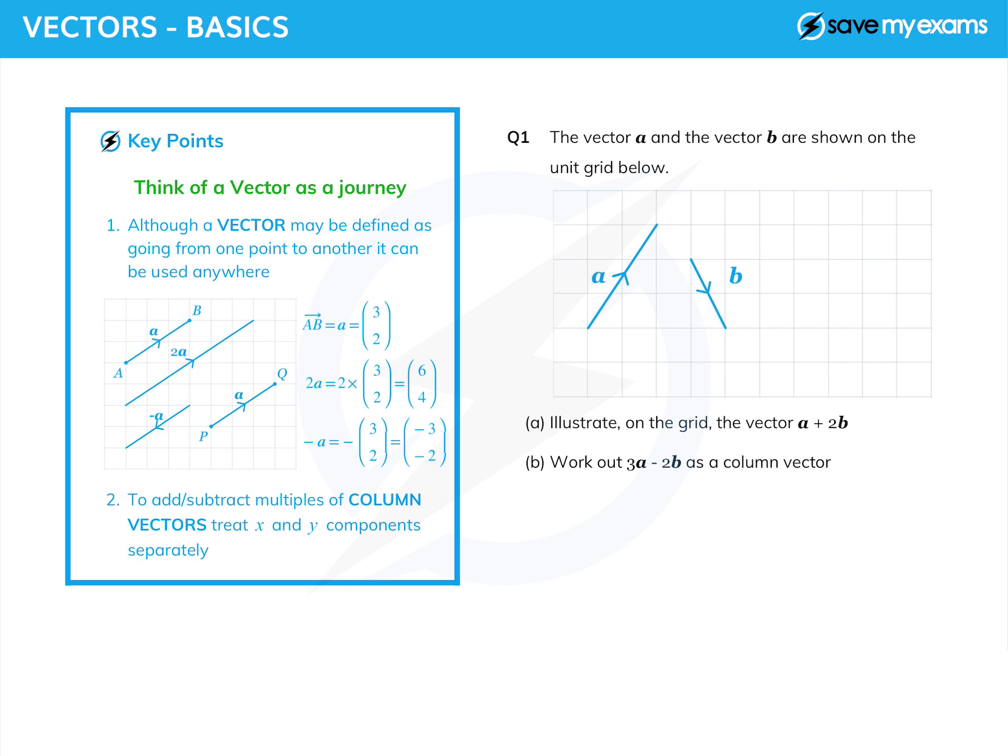Although in my diagram here I have a vector little a—notice it's in bold as it will be in your exam paper—which does go from A to B, so I've defined the vector from A to B. That's the notation as a, yes it goes from A to B.